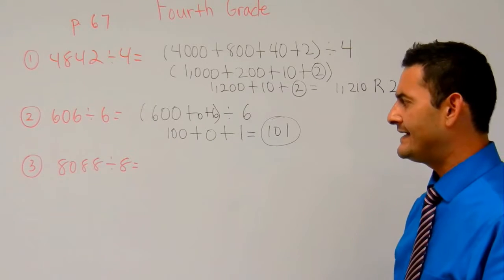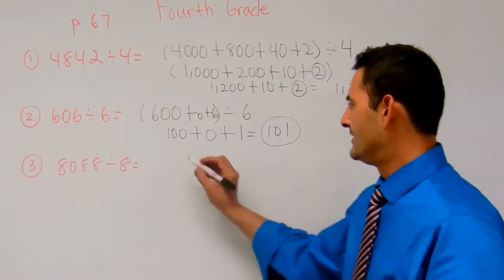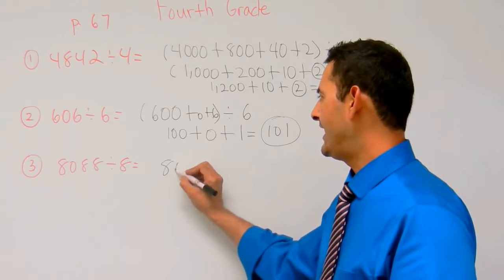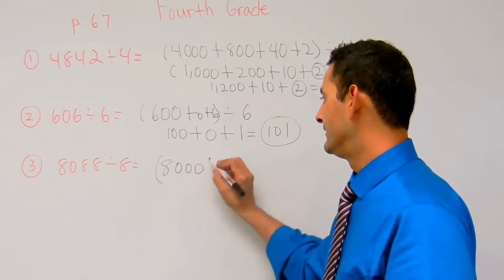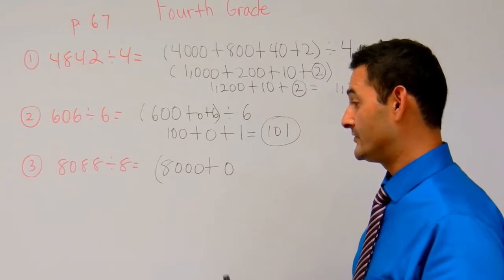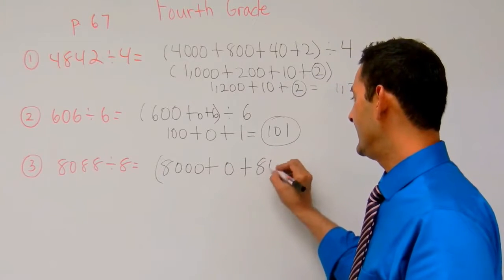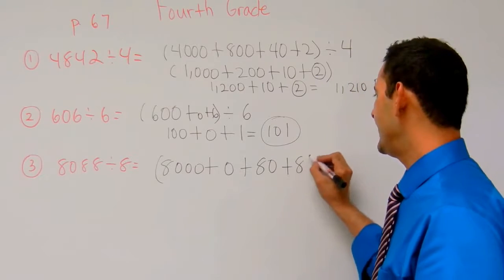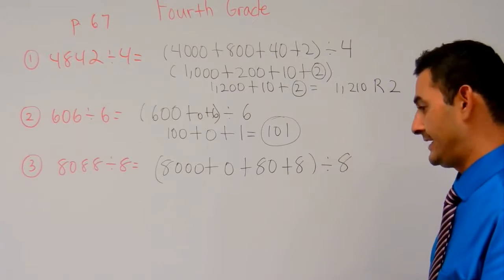Here I've got 8,088 divided by 8. So I'm going to do 8,000 plus 0 hundreds plus 80 plus 8 divided by 8.